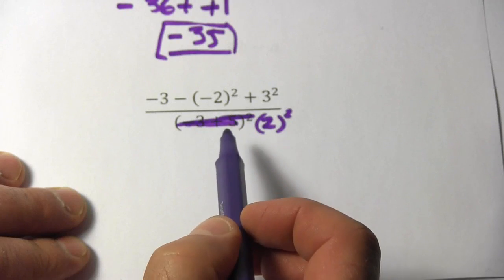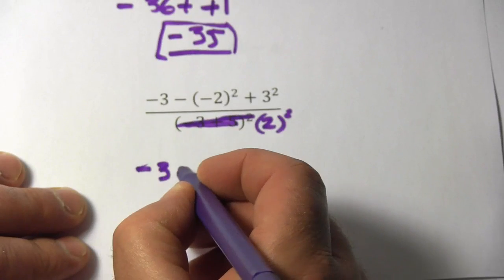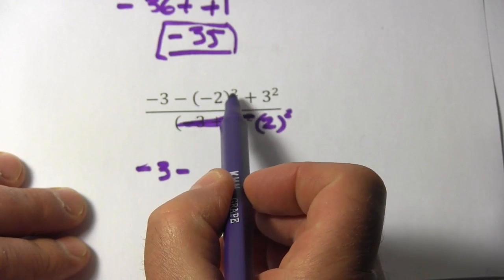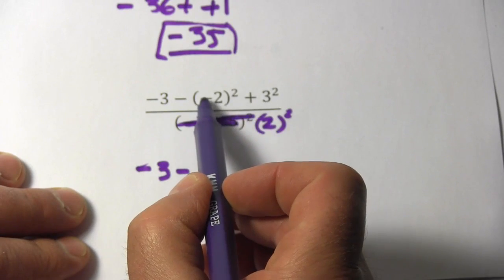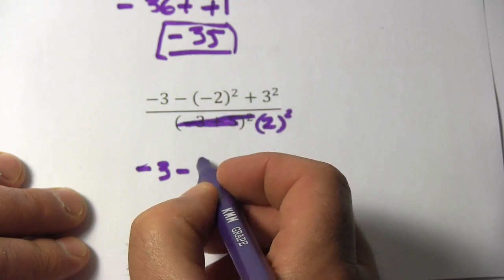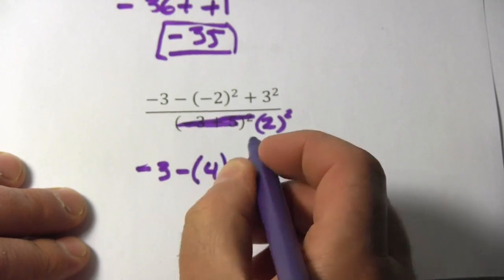let's go after exponents next. So here on top we have, well let me rewrite it, we've got negative 3 and then minus, and then inside the parentheses negative 2 squared, because this is an even power, this is going to end up positive, so, and 2 squared, 2 times 2 is 4, so this is a positive 4.